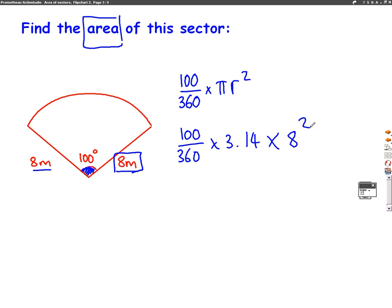And again, we spoke about how to do this on a calculator. The fraction means divide. So we're going to write 100 divided by 360 times 3.14 times 8 squared. So we type this into a calculator just as I've written down there. And we'll get the answer of 55.8 meters squared.